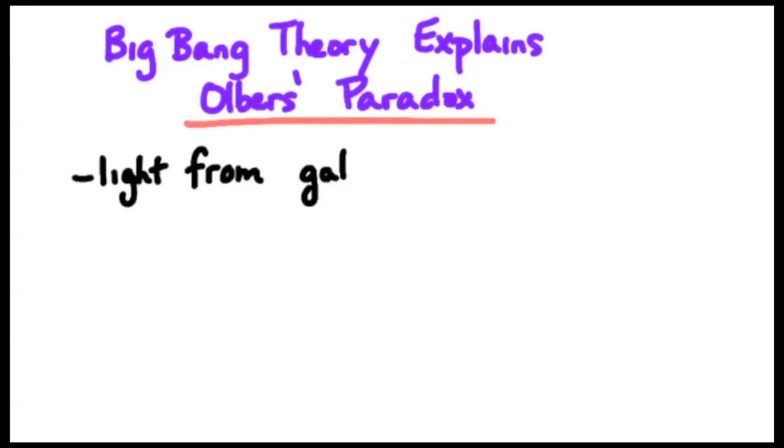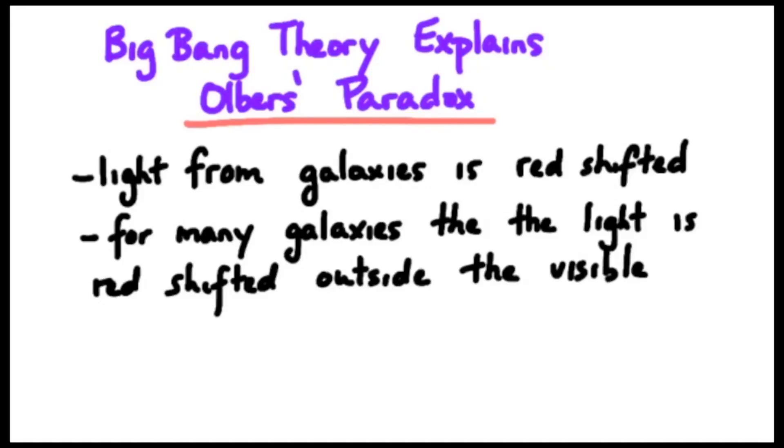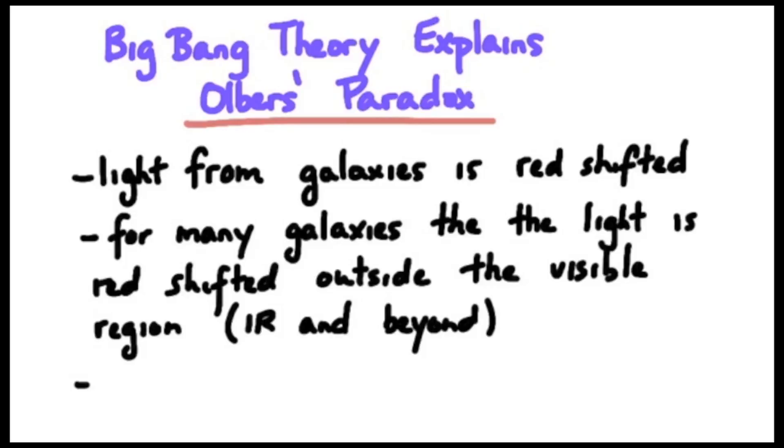Here's how Big Bang Theory explains Olber's apparent paradox. With all this matter, all these galaxies starting at a single point, all moving away from each other, we get redshift. Many of the galaxies are moving so fast that the redshift actually shifts their light outside of the visible spectrum into the infrared and beyond the infrared. So a lot of these stars are not going to contribute to the light that we should see at night, according to Olber. And therefore, Big Bang Theory accounts for why the sky is, in fact, dark at night, and fixes Olber's paradox.